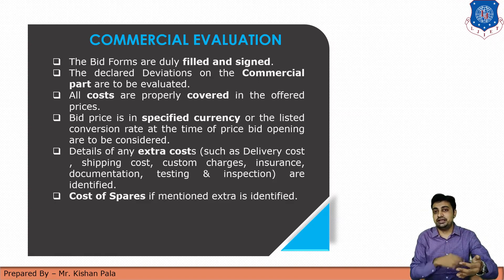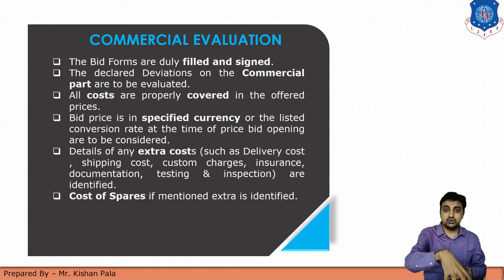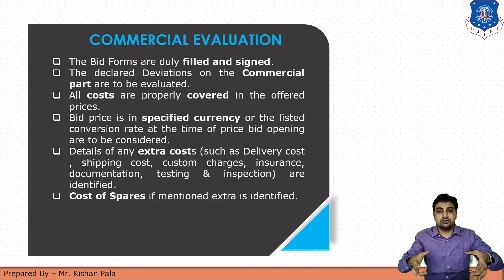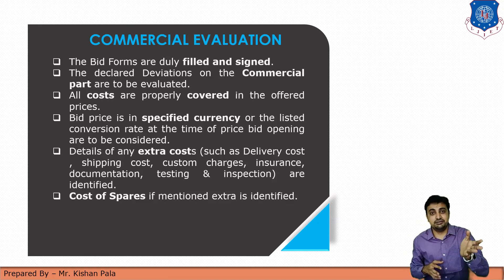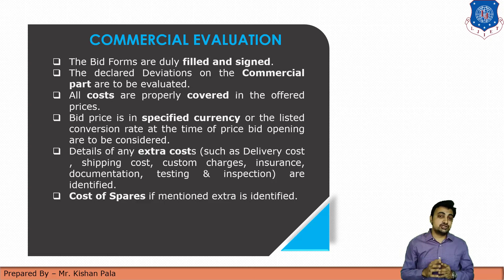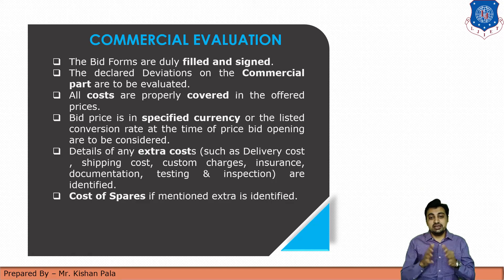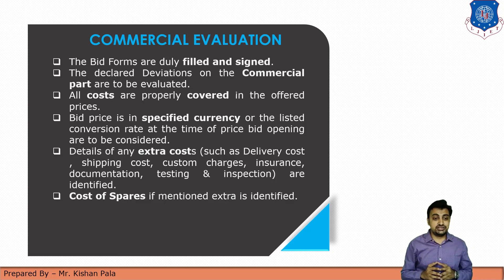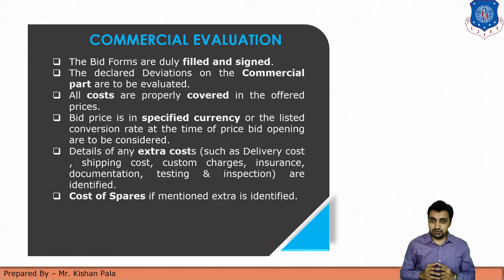Another point in commercial evaluation is that the bid price must be in the specified currency. For example, if the contractor is bidding for international work, he has to quote in the specified currency — if the work is declared by India, the currency will be rupees. Additionally, details of any extra costs like delivery cost, shipping cost, custom charges, insurance for laborers, documentation, testing of all materials, and inspections should be covered and identified in the evaluation, as well as the cost of spare parts if mentioned in the contract document.